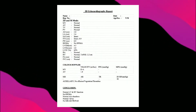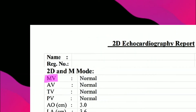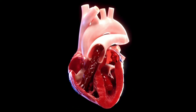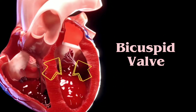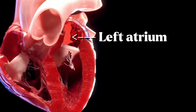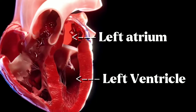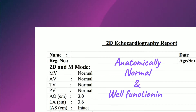Let's start. First, we have MV. MV means mitral valve. Mitral valve is also known as bicuspid valve because it has two leaflets, and it is situated between the left atrium and left ventricle. 'Normal' means the mitral valve is anatomically normal and well-functioning.